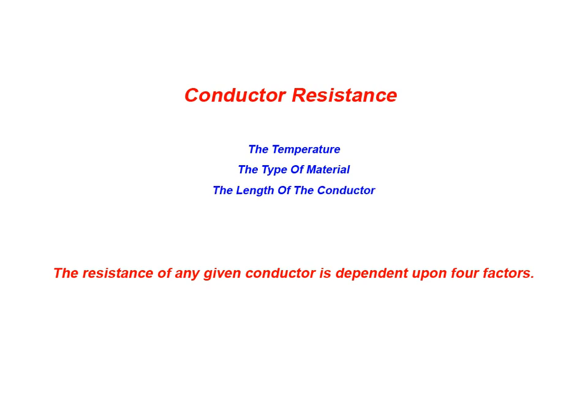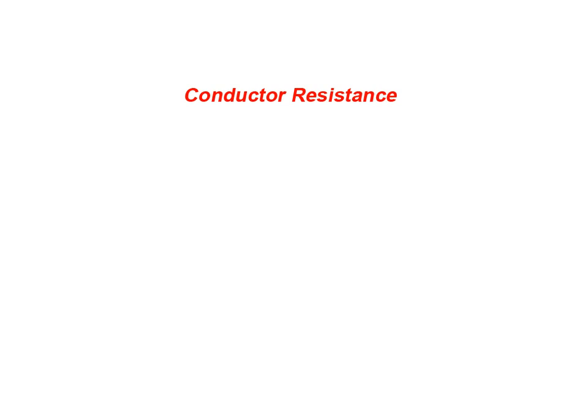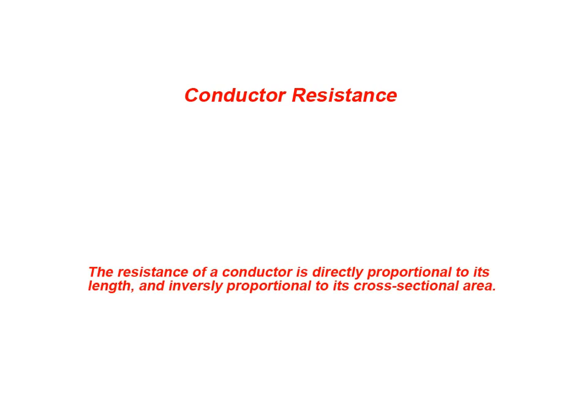Another determining factor influencing overall resistance is the length of the conductor. Lastly, the cross-sectional area of the conductor also plays a role in determining its resistance. With respect to physical dimensions, the resistance of a conductor is directly proportional to its length and inversely proportional to its cross-sectional area.